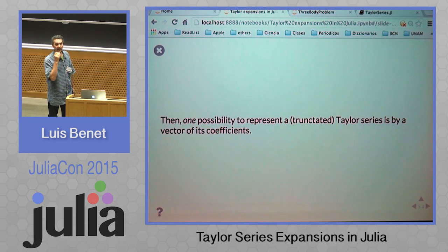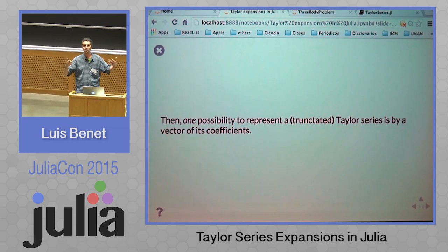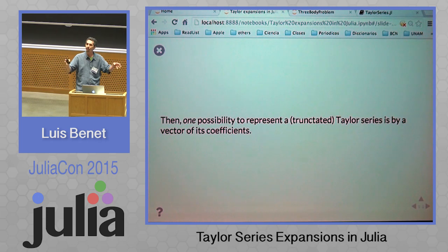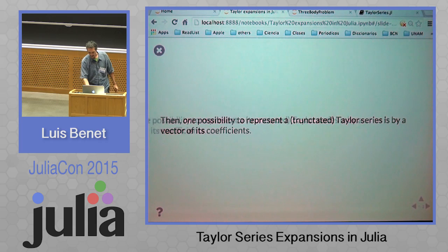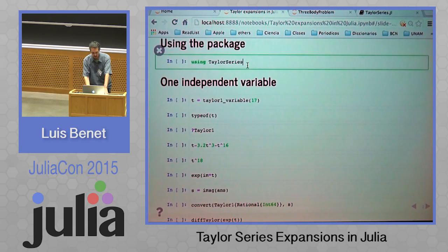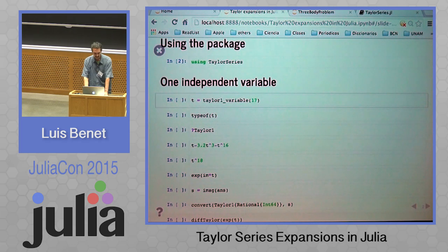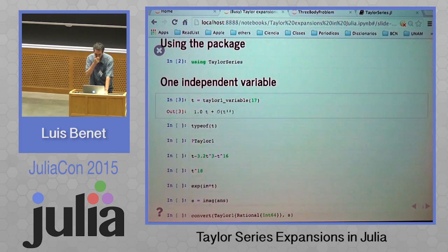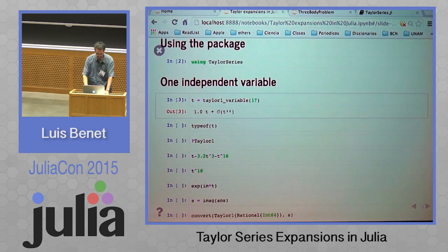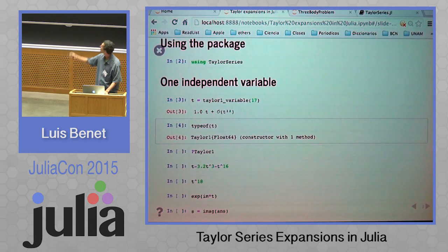The point I want to draw here is that you can represent one of those Taylor series as a vector of coefficients of either homogeneous polynomials or simply numbers. So I will show you how this thing works. The package is called TaylorSeries, it is on metadata, and you simply define a Taylor variable this way.